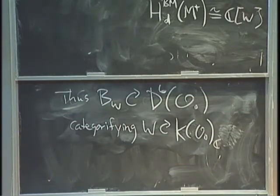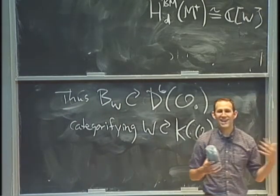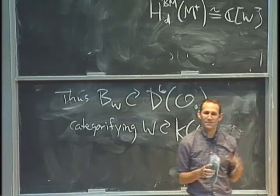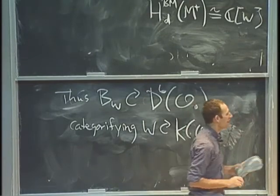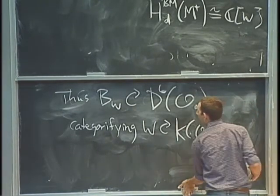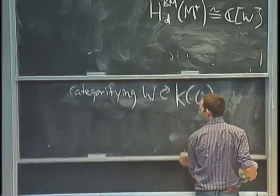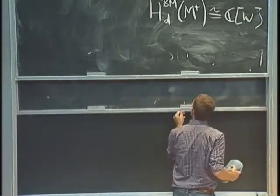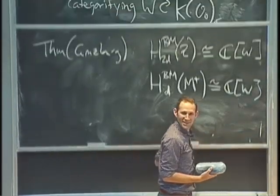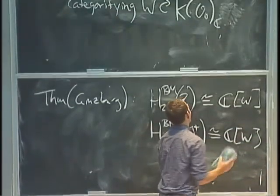So that's half the talk. Category O was introduced in the context of Lie theory, and I started by defining a simple algebraic group. What I want to convince you now is that category O has absolutely nothing to do with Lie theory.